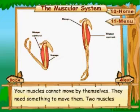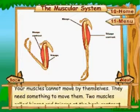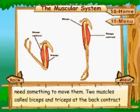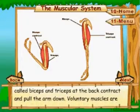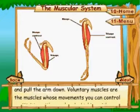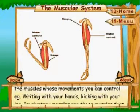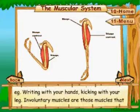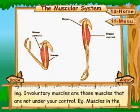The muscular system. Your muscles cannot move by themselves — they need something to move them. Two muscles called biceps and triceps at the back contract and pull the arm down. Voluntary muscles are the muscles whose movements you can control. Examples include writing with your hands and kicking with your leg.